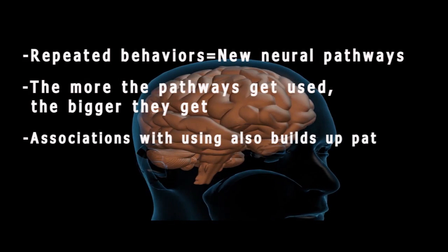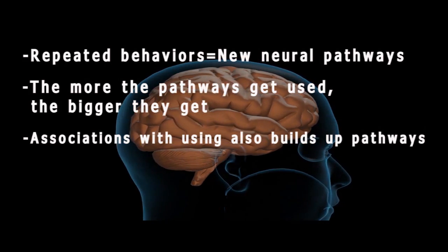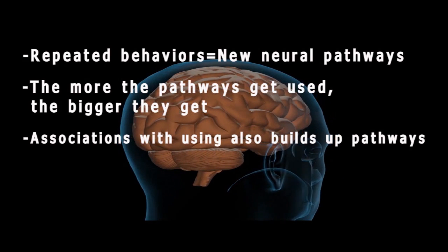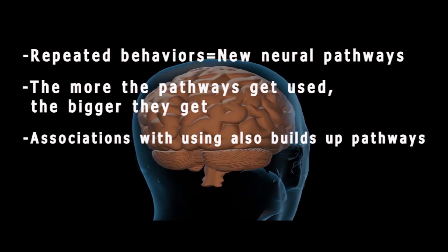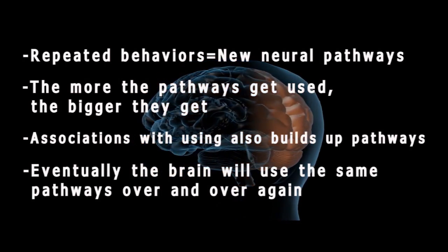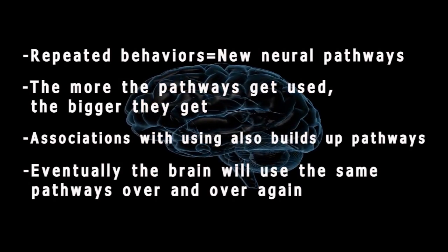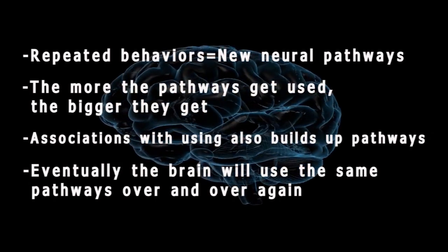As addiction progresses, the user will form more and more associations with using, which expands and deepens these networks. The bigger these neural pathways become, the harder it is for the user to change their behavior and reactions because their brain is driving them to behave in the way it's become accustomed to.